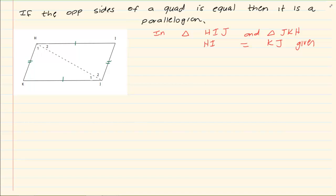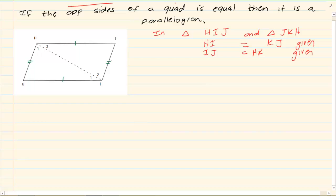Then we have got that IJ is equal to HK. Also this was given because they said the opposite sides are equal. HJ? Why? This is common.